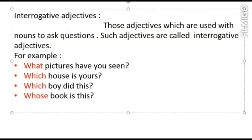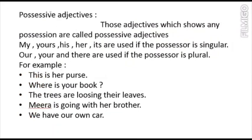Next is possessive adjectives. I forgot to mention it in the chart given in the previous video, but it is also one of the kinds of adjectives. Those adjectives which show any possession are called possessive adjectives. Possession means a thing which belongs to someone — anything which belongs to someone is called possession.